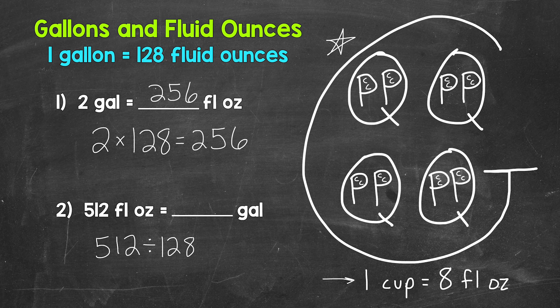512 divided by 128 gives us four. So 512 fluid ounces equals four gallons.